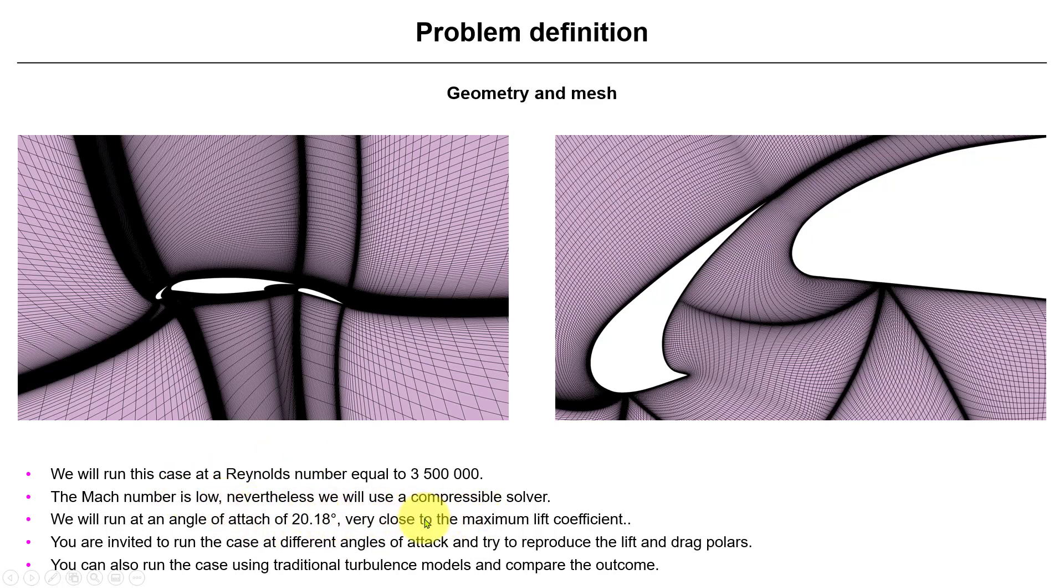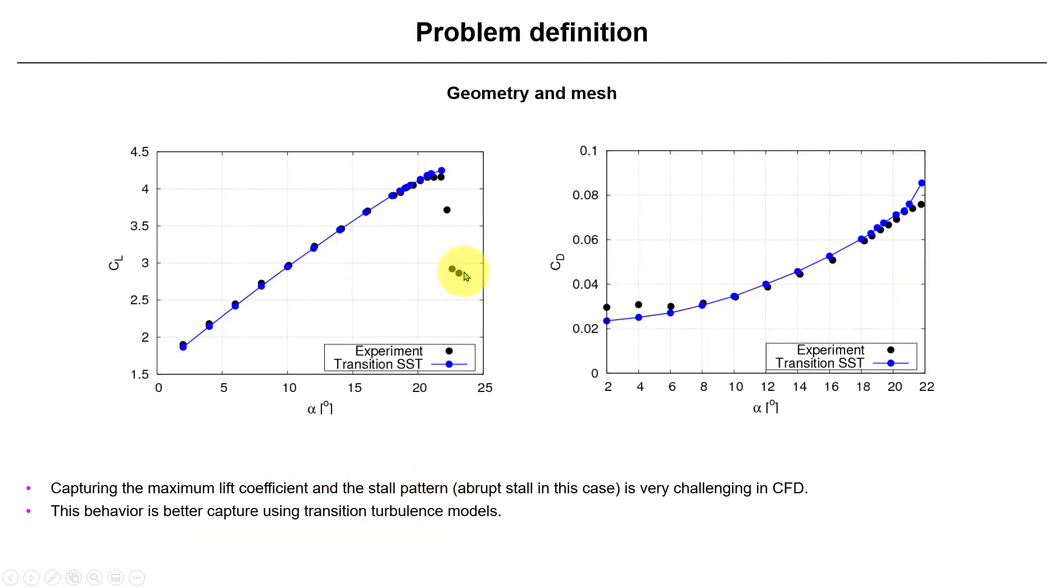This is very close to the maximum lift coefficient. I invite you after seeing this case running to rerun at different angle of attack and try to capture the physical behavior. You have the references there, but also we're attaching a file with different angle of attack and CL CD. Basically, this is what we have using the transition SST.